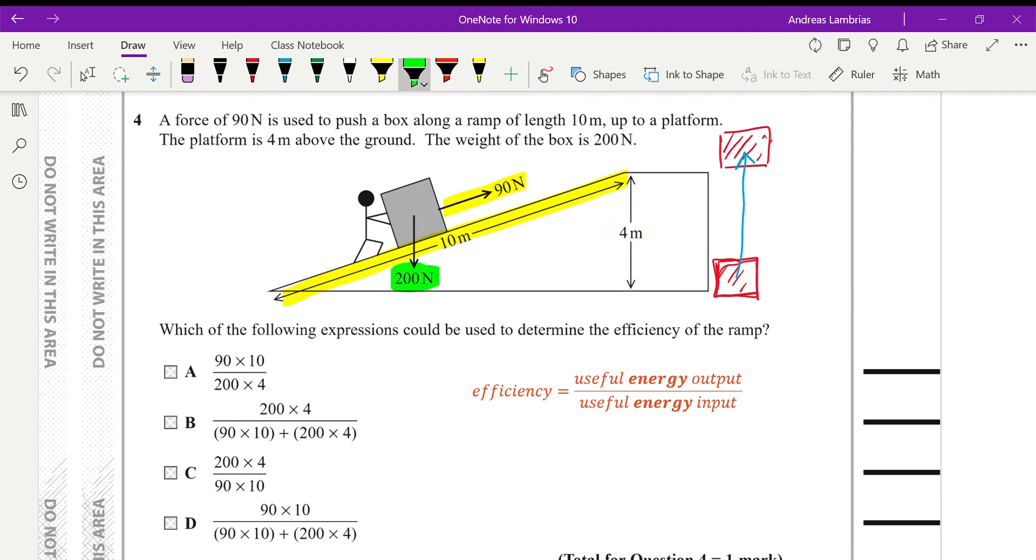Therefore the useful energy output will be a force equal to the weight on the opposite direction of course times the distance that I'm moving it up. Therefore it will be 200 times 4. And the useful energy as I said before is the energy that is applied on the box moving it along a 10 meter ramp. So that will be 90 times 10. So therefore we can identify that this is option C.